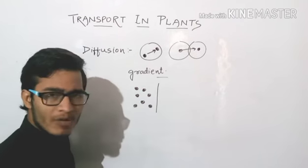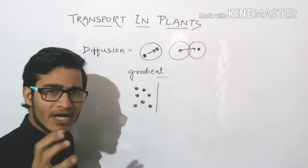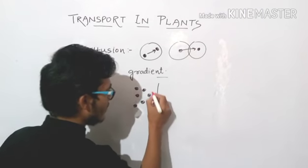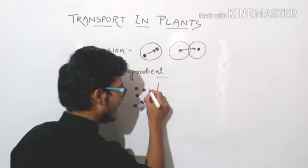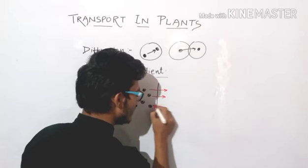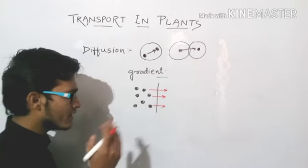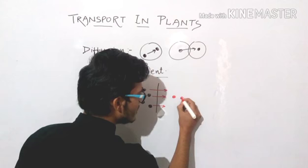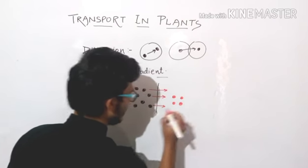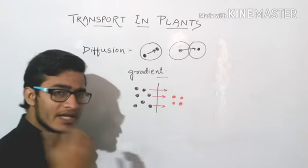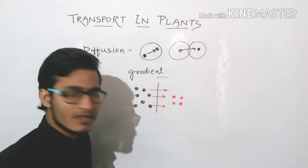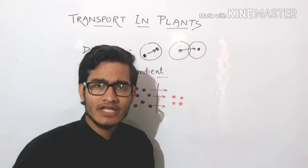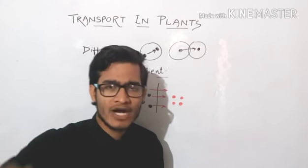This is a particular area where the concentration of a particle is quite high — let us assume it is a gaseous or liquid particle. It has a tendency to move from high concentration toward lower concentration. It will keep moving until the concentration is equal on both sides, because the diffusing particles create some pressure. When particles are equal on both sides, pressure is equal and there is no net flow of particles.